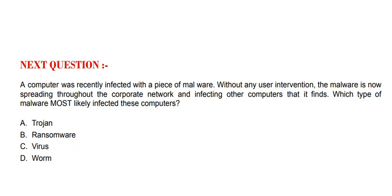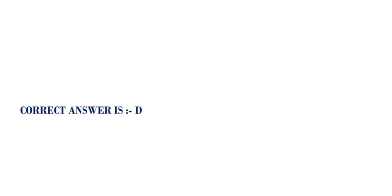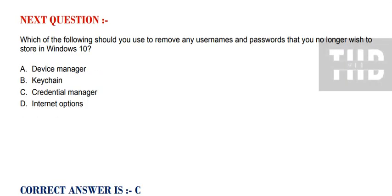Next question: A computer has recently been infected with a piece of malware without any user intervention. The malware is now spreading throughout the corporate network and infecting other computers it finds. Which type of malware most likely infected these computers? Option A: Trojan. Option B: Ransomware. Option C: Virus. Option D: Worm. The correct option is Option D.